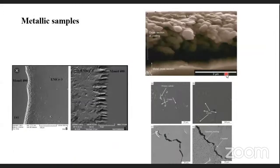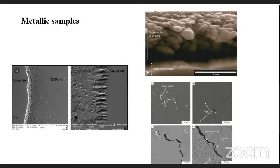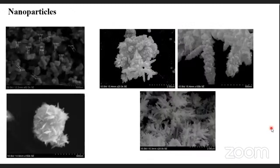For mechanical and aerospace engineers, we move to metallic samples. We have weld joints and can see coating surfaces, coating thickness, cracks, and the type of grains present. These kinds of things can be identified with scanning electron microscopy.